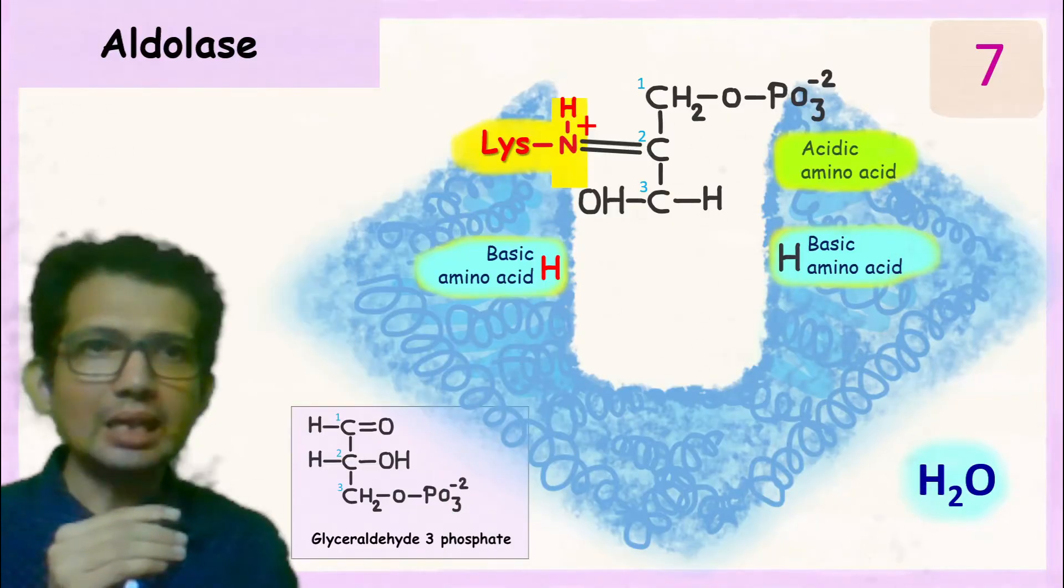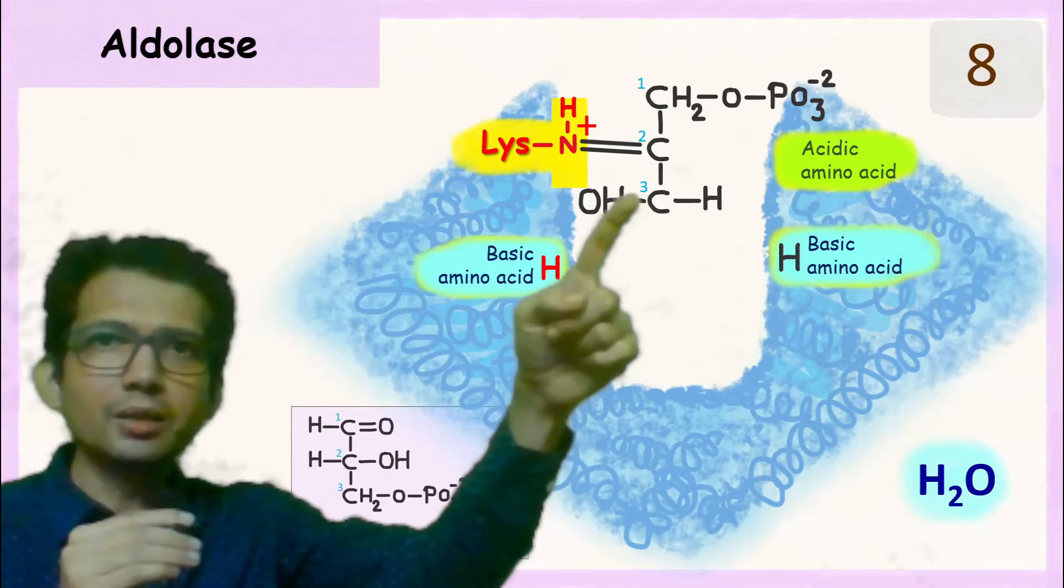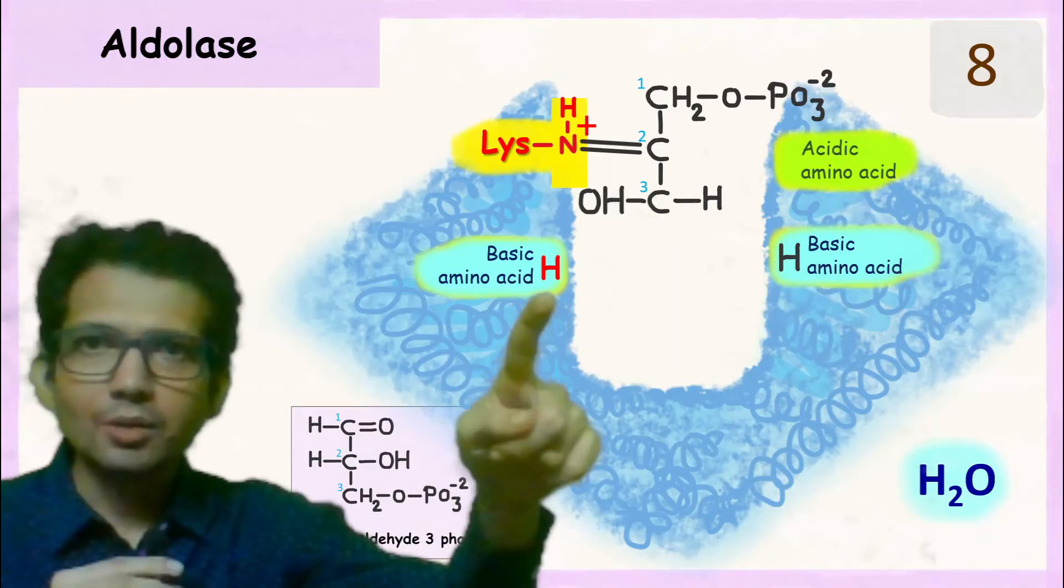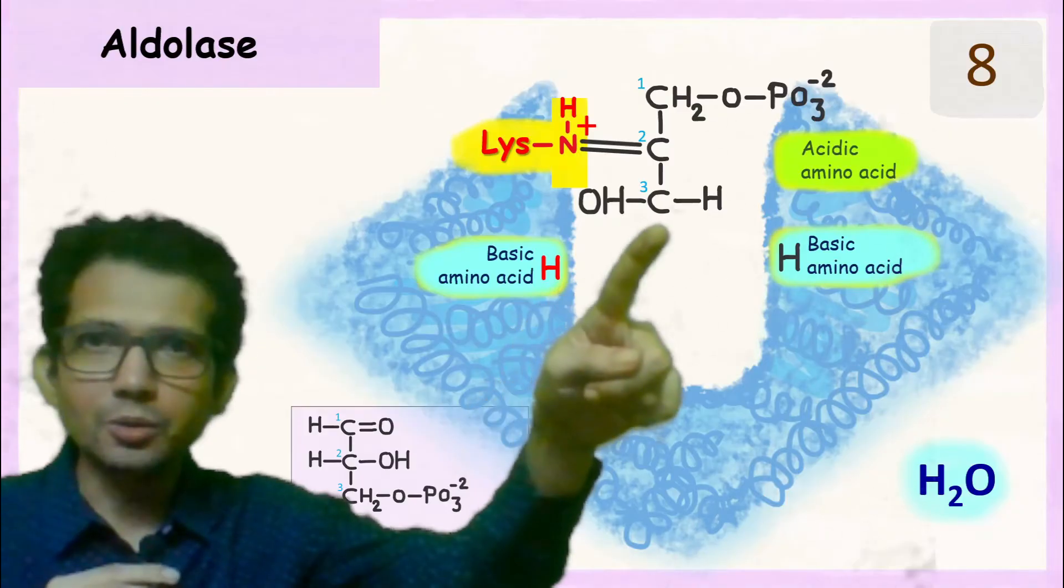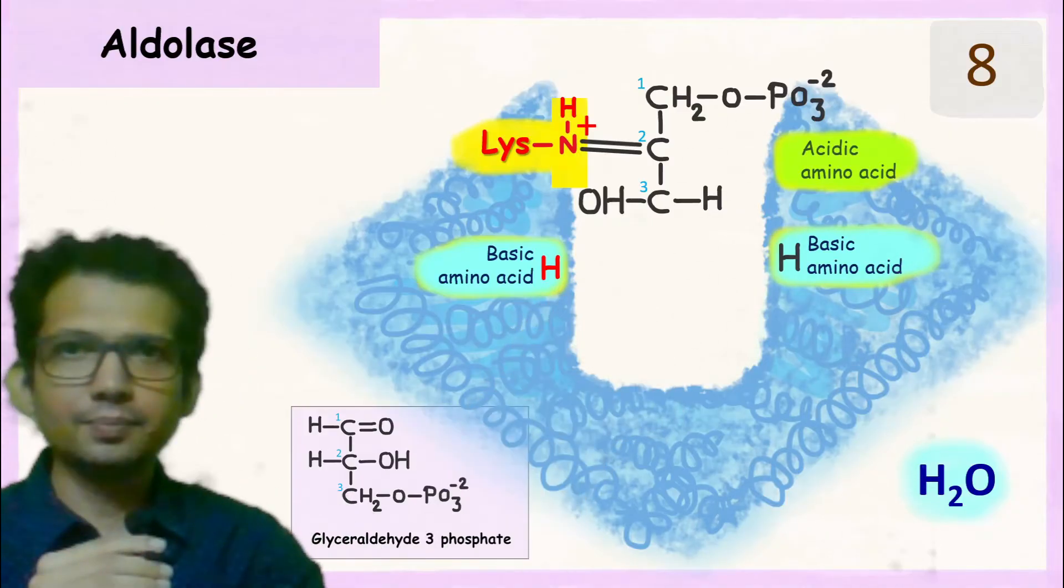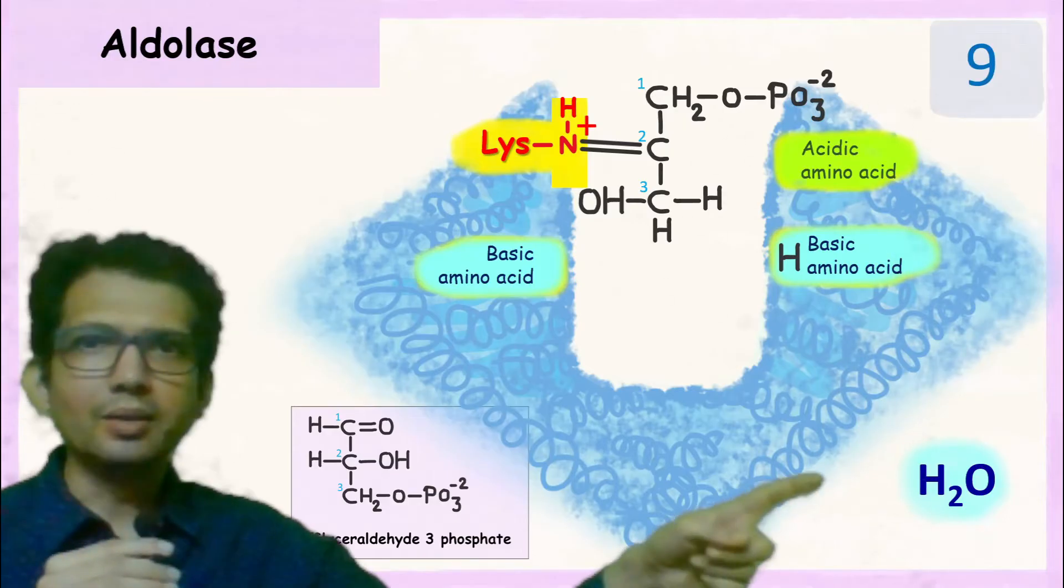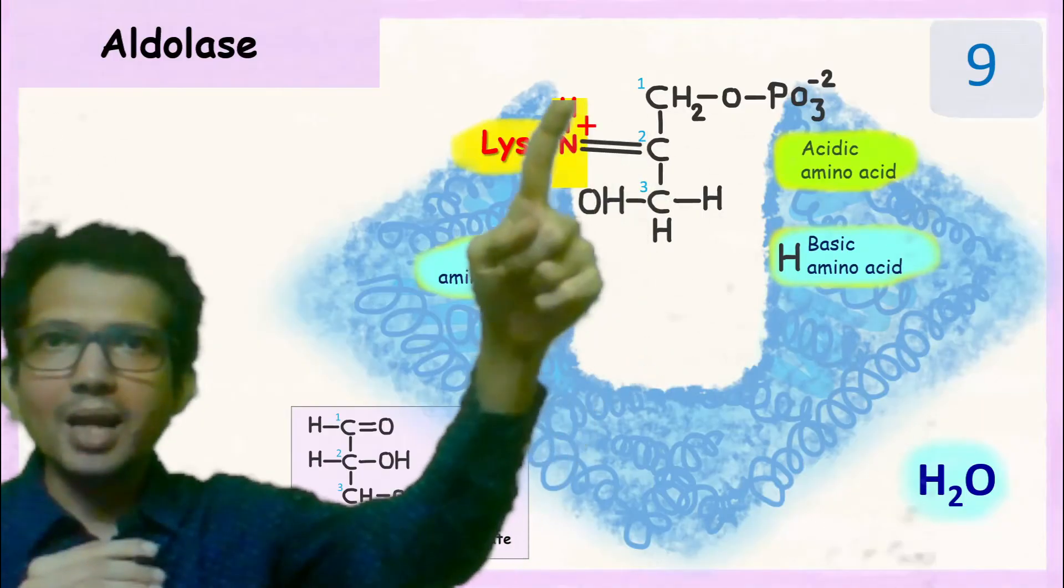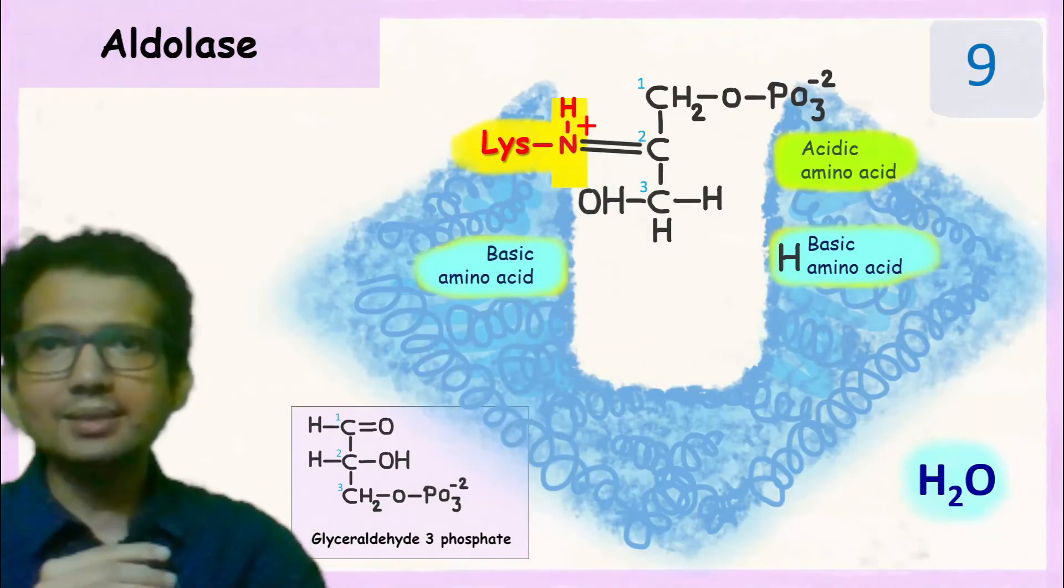Now let's see how the second product is formed. Here the third carbon has only 3 bonds. So this basic amino acid will donate its hydrogen to this carbon. Now this water molecule will break the bond between this carbon and nitrogen of lysine.